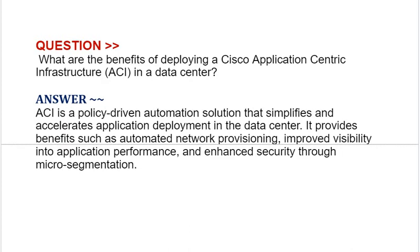Our next interview question is: What are the benefits of deploying a Cisco Application Centric Infrastructure ACI in a data center? Your answer should be: ACI is a policy-driven automation solution that simplifies and accelerates application deployment in the data center. It provides benefits such as automated network provisioning, improved visibility into application performance, and enhanced security through micro-segmentation.